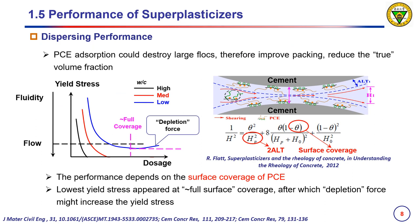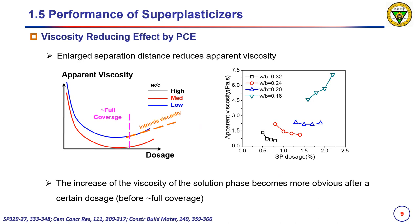The dispersing performance of PCE comes from the reduction of yield stress. PCE adsorption could destroy larger flocs, therefore improving packing and reducing the true volume fraction. The performance depends on the surface coverage of PCE. The lowest yield stress appeared at nearly full surface coverage, after which depletion force might increase the yield stress. The enlarged separation distance also reduces the apparent viscosity, though the increase of solution-phase viscosity becomes more obvious after a certain dosage.